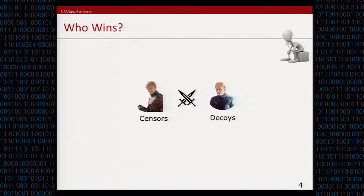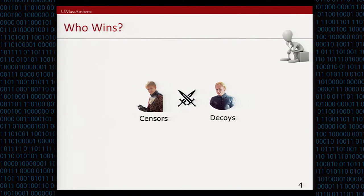In this paper, we are asking the question of who is winning in this interaction. Is the routing around decoys attack strong enough to defeat any kind of decoy routing system? Or are there some decoy placement strategies that are able to defeat the routing around decoys attack? We're trying to answer the question of which of these parties is able to win the game.